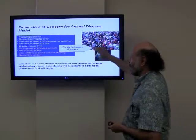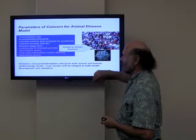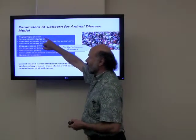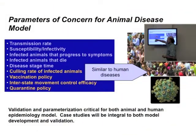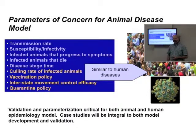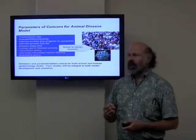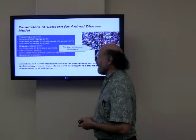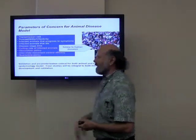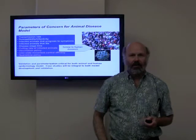We have different parameters for the spread of disease among animals. Some things are the same — transmission, susceptibilities, infected animals — but some of the mitigations are different. Culling: we kill cows that are infected; we can't do that with people. Vaccination policy: we can force cows to be vaccinated; we can't force people to be vaccinated. We can stop movement, we have quarantine — lots of mitigation options on animals that we don't have on people.